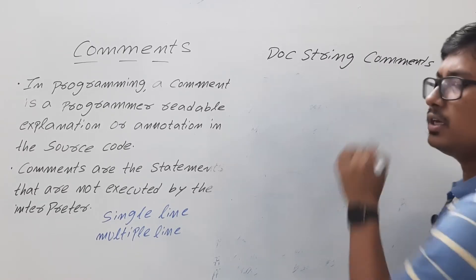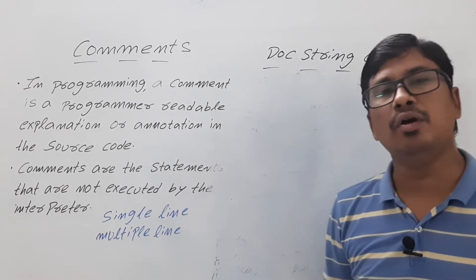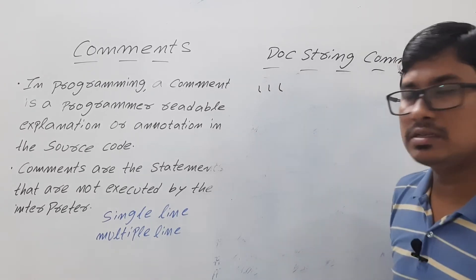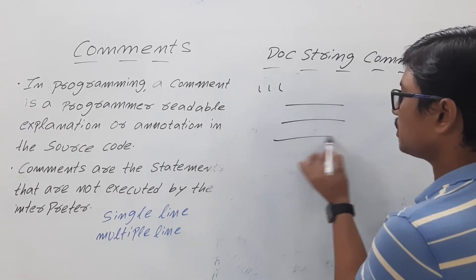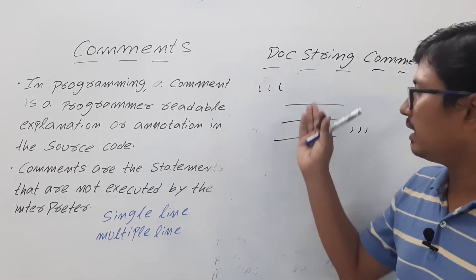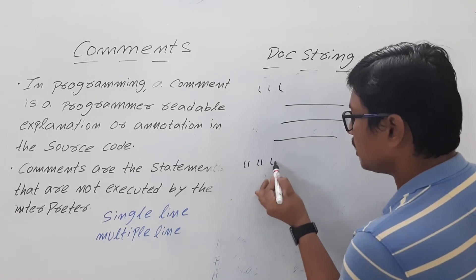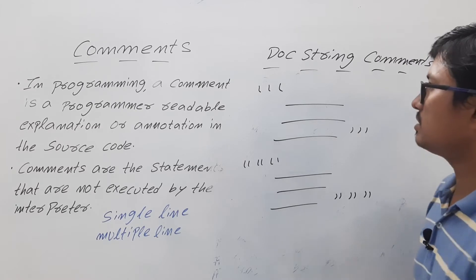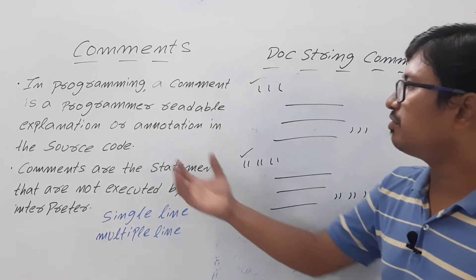Doc strings work similarly to comments, but their usage context is different. You can represent doc string comments using triple single quotes — start with three single quotes, write your content, and end with three single quotes. Or you can use triple double quotes — start with three double quotes, write whatever you want, and close with three double quotes.